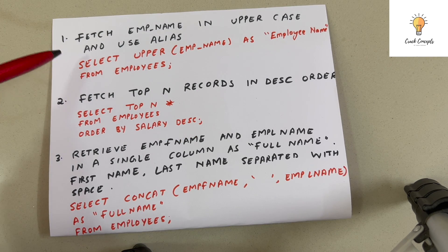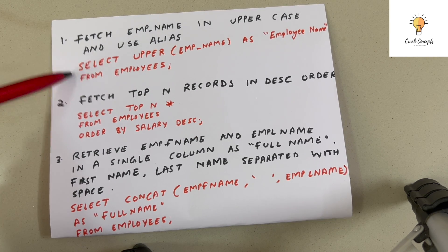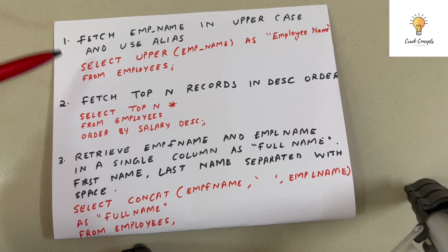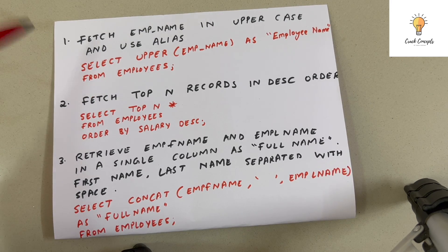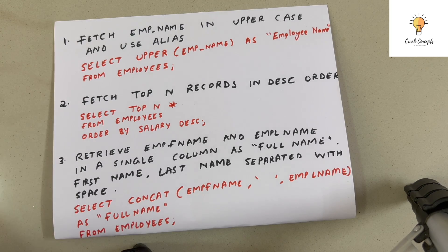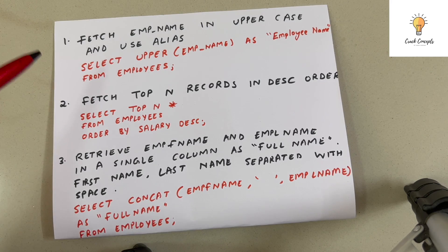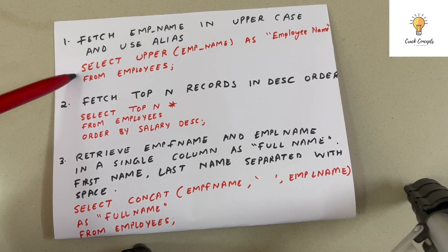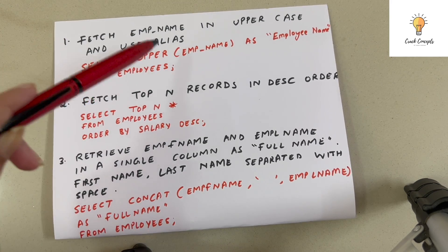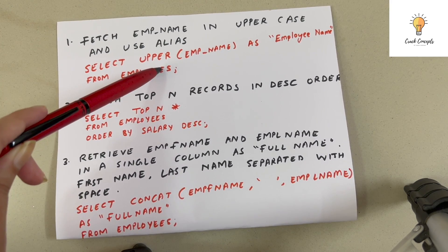The first query is: fetch employee name in uppercase and use an alias. We need to change the employee name to uppercase and give it a different name. Alias means a different name, and we use the keyword AS. The query uses SELECT UPPER — UPPER is a function.